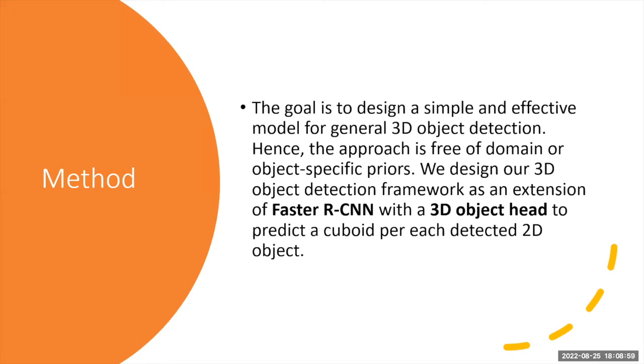These researchers have created a simple but effective and accurate model to detect 3D objects from 2D images. The important thing is they have added a 3D object head to the existing Faster R-CNN model.